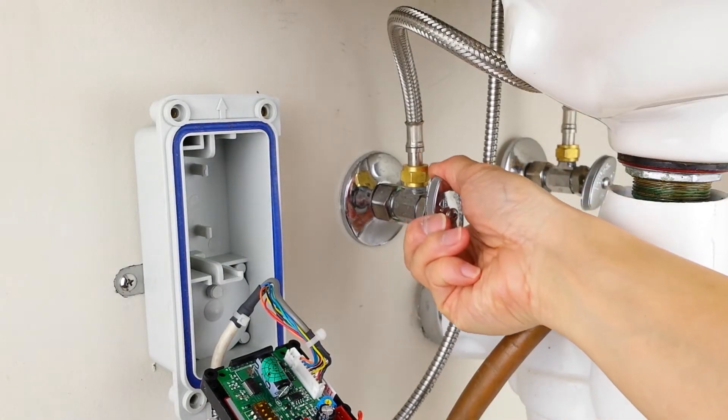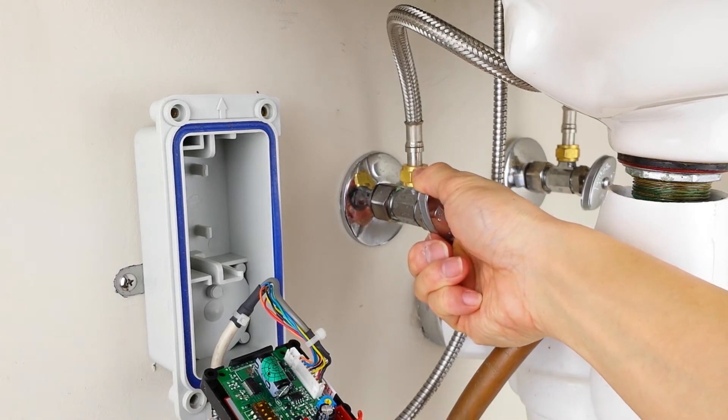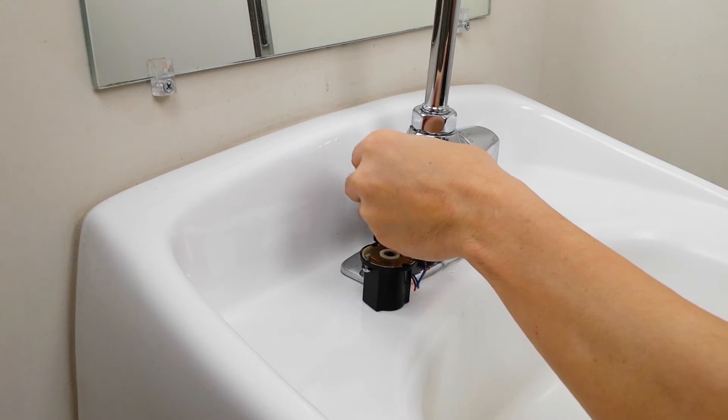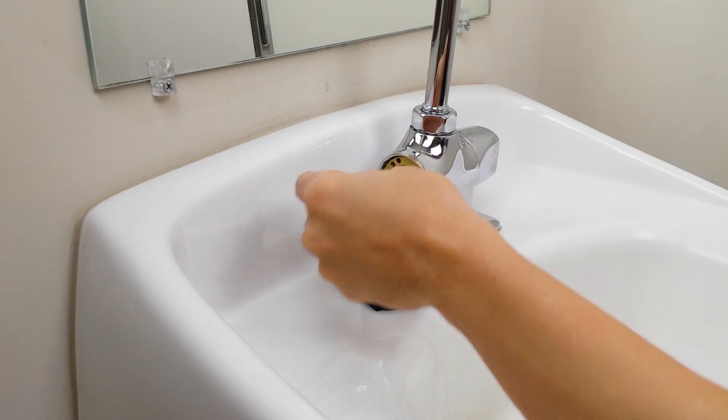To remove the control disc, you can carefully turn on the water from the angle stop until the disc is pushed out. If the faucet is not mounted, you can easily shake it out.